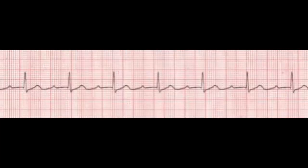In a first degree AV block, the wife, P-Wave, is waiting at home. The husband, QRS, comes home late every night, but he always does make it home, and he always comes home at the same time every night.